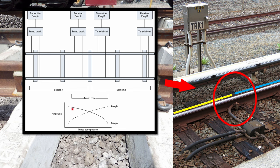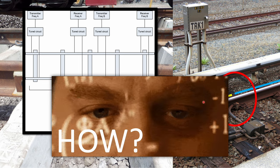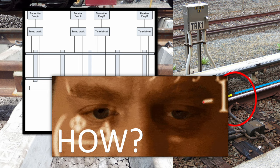What impedance bonds are able to do is suppress the frequency of one track circuit. So if this is frequency A, it suppresses frequency A in this direction. Same way if this is frequency B, it suppresses frequency B in that direction. That is how it achieves electrical isolation between two track circuits without physically cutting the track. How does it do that? That's what we'll look into now.